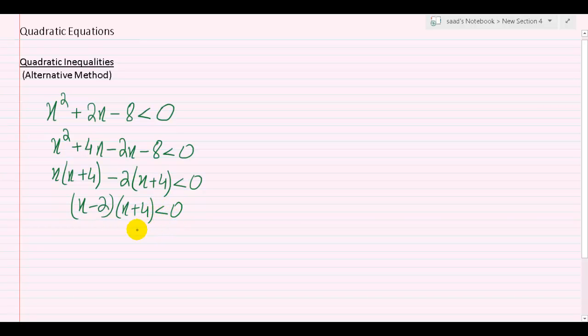So that would mean x minus 2 equal to 0, which will lead us to the conclusion that x equals to 2, or x plus 4 equals to 0, which will lead us to the conclusion that x is equal to negative 4.